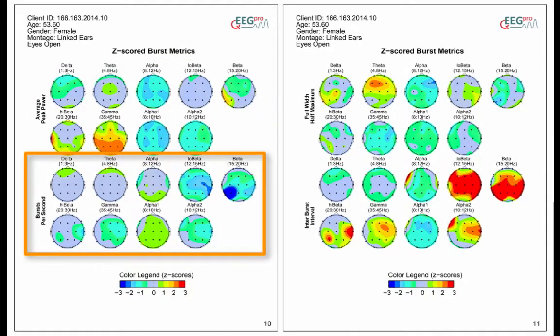The Z-scored Bursts Per Second shows the deviances in the average number of bursts that occur per second.